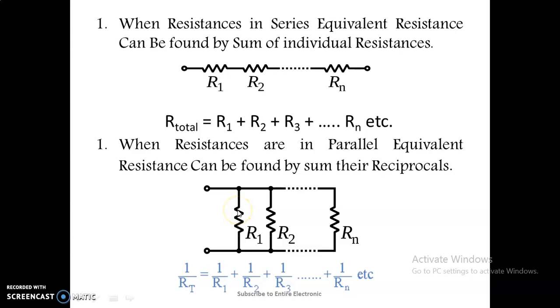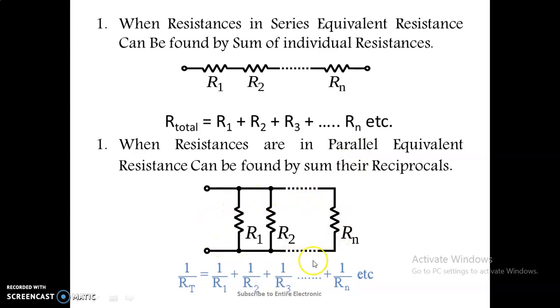For parallel combination, we just have to take the reciprocal of each resistance and add them together. That is, we take the sum of the individual reciprocals for the parallel combination.